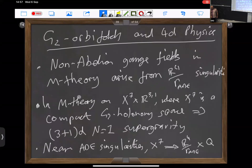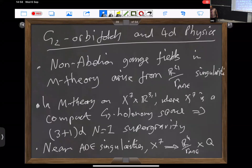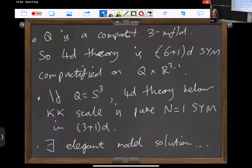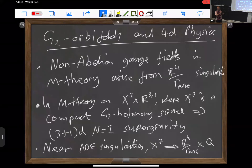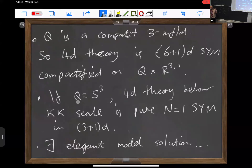Let's say a few words about the G2 case. Now we've got seven extra dimensions and we're talking about four-dimensional theories. You can get some very interesting things just about the occurrence of ADE-type singularities inside a G2 holonomy space. Near such a singularity, the space will look like a product where Q is some compact three-dimensional manifold. From the point of view of four dimensions, you get a theory which is a compactified version of seven-dimensional super Yang-Mills theory compactified on Q. If Q was a sphere, the theory that you get below the Kaluza-Klein scale is actually pure super Yang-Mills theory in four dimensions.